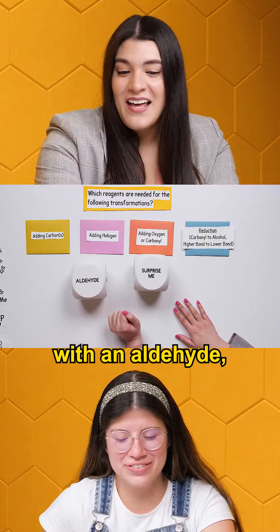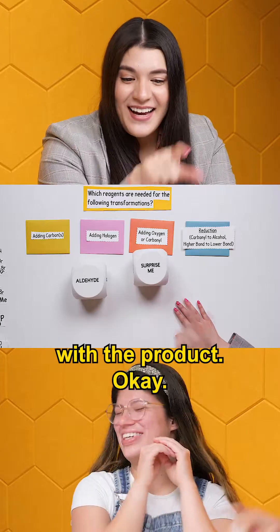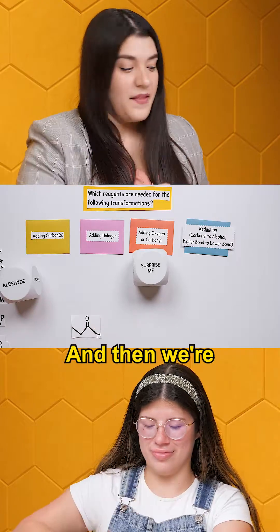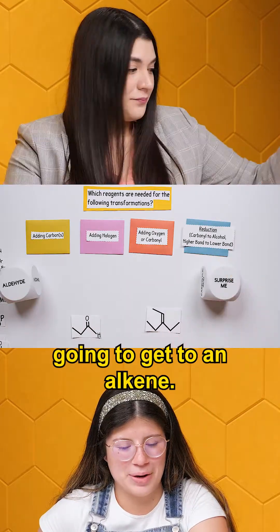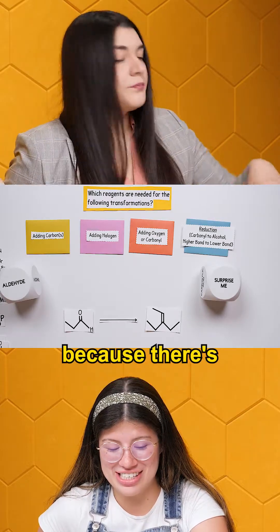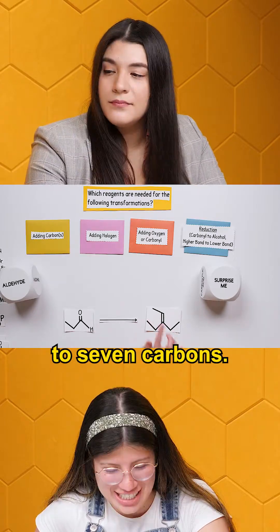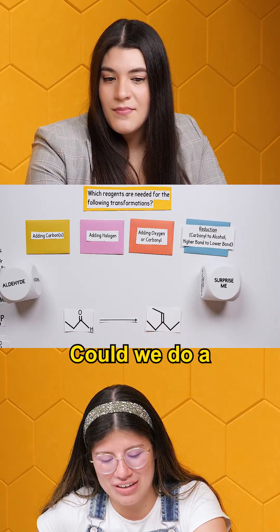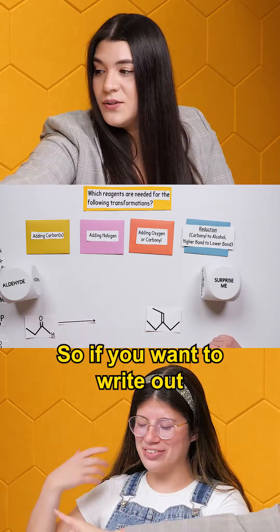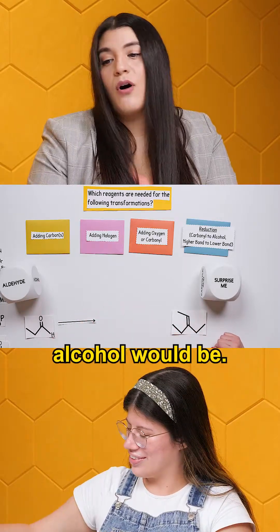Starting off with an aldehyde, we're going to get to an alkene. Looking at the difference, there are a few more carbons on this one — we go from three carbons to seven carbons. Can we do a Grignard reagent? Go ahead and write out the Grignard reagent we would use, then build whatever that alcohol would be.